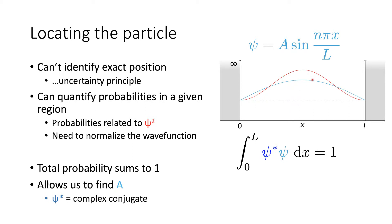A reminder: psi-star is our complex conjugate. In the last session, we showed that we could find the value of A, but we didn't explain how it was found. That's the purpose of this video — to guide you through the process of finding this value of A.